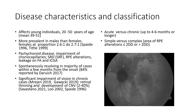Traditionally, it was divided into acute versus chronic cases depending on duration of the disease, with the division at four or six months depending on the research. However, nowadays we try to use a modern classification published just a year ago, where cases were defined as simple or complex depending on the area of RPE alterations.